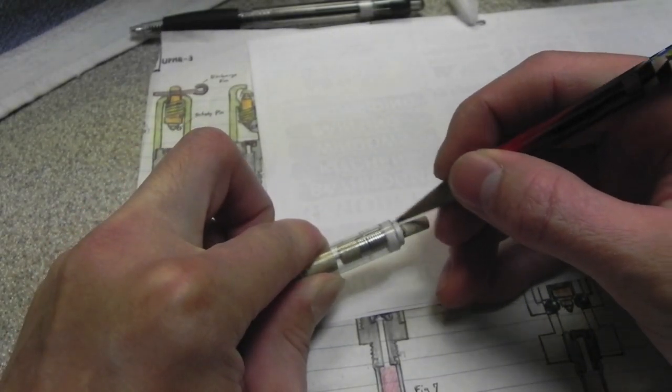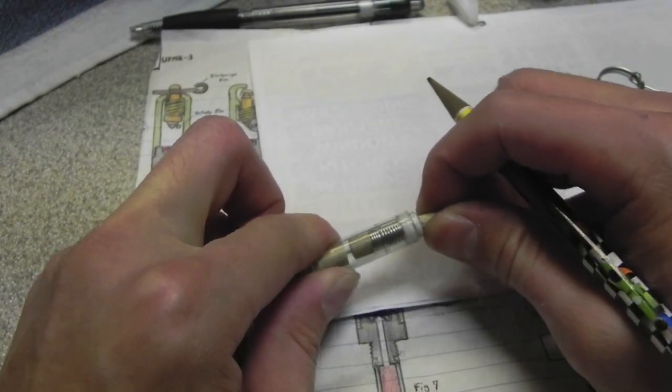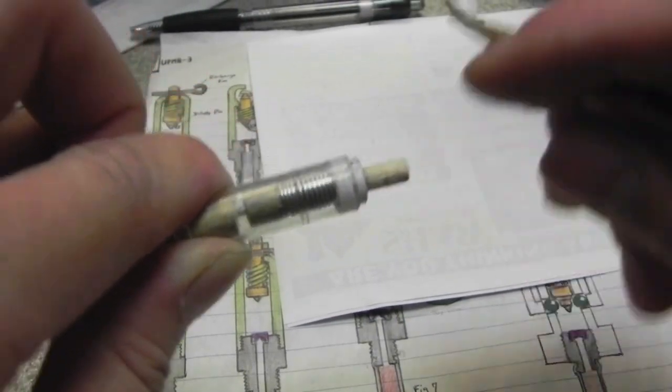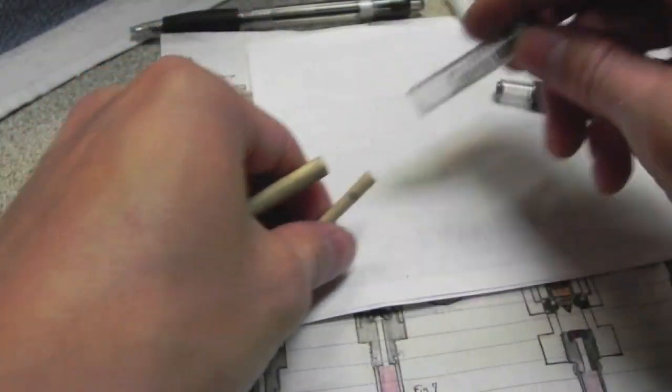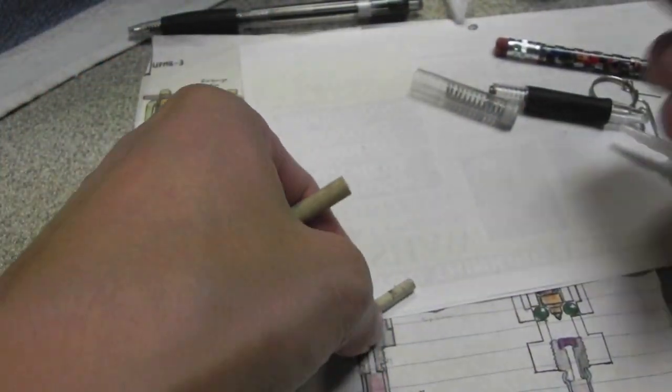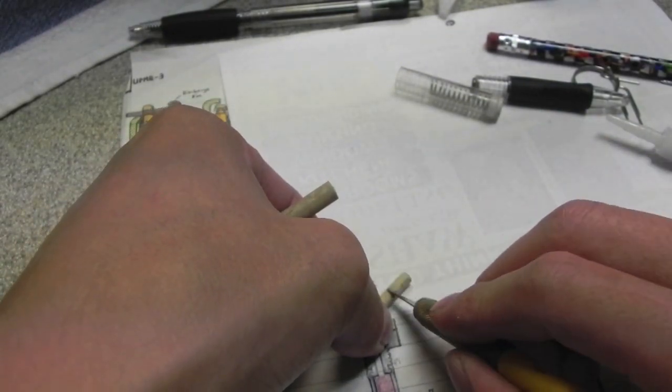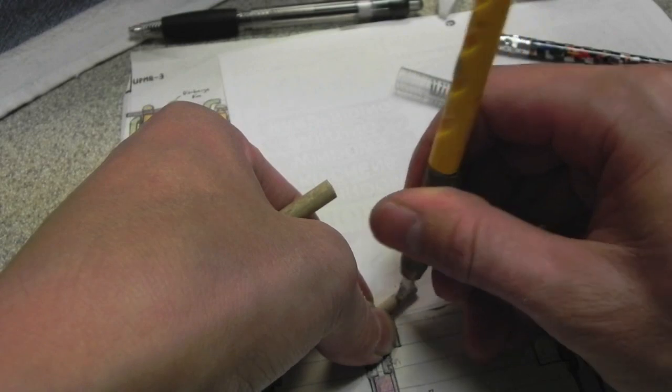And mark a spot. Mark a line right there. And I'm gonna drill a hole right there for the pin. Just gonna flatten out the surface a little bit, so it's easier to drill.